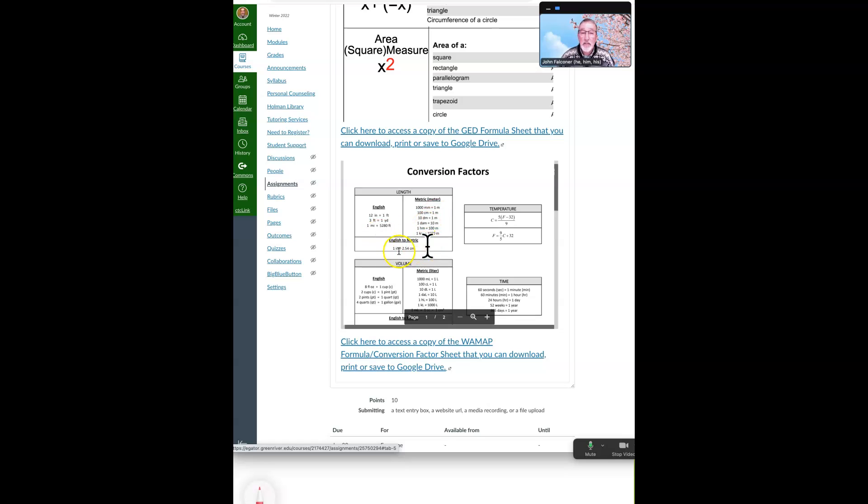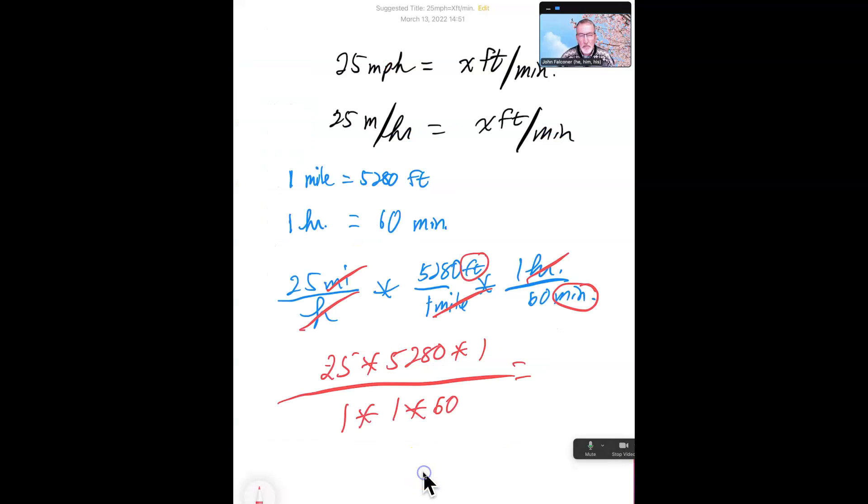So some of you may already know there's 5,280 feet in a mile. And most of you should know how many minutes there are in an hour.